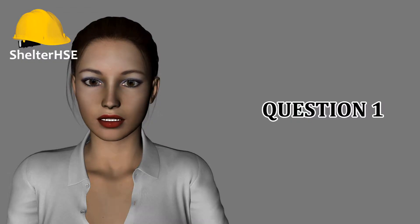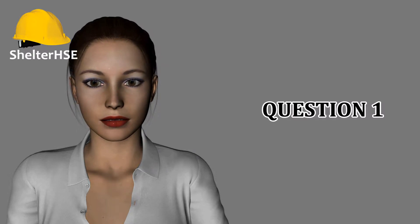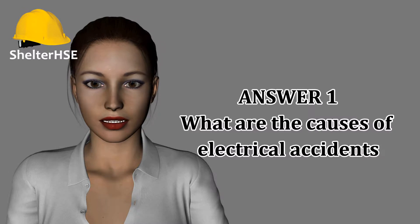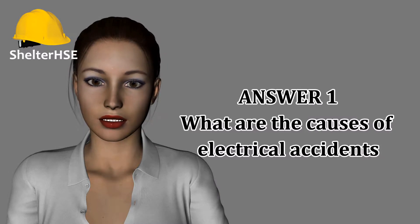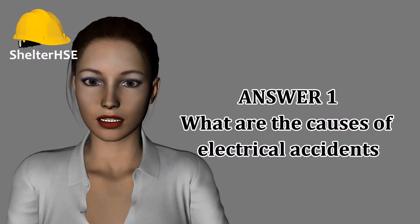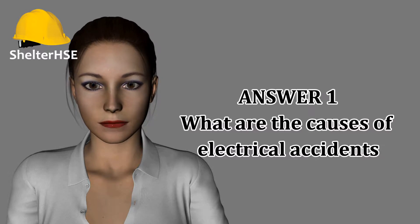Outline the conditions that can lead to an accident while working with portable electrical equipment. These conditions have potential to result in an accident. Using unsuitable equipment has a risk of accident due to contact with the body.